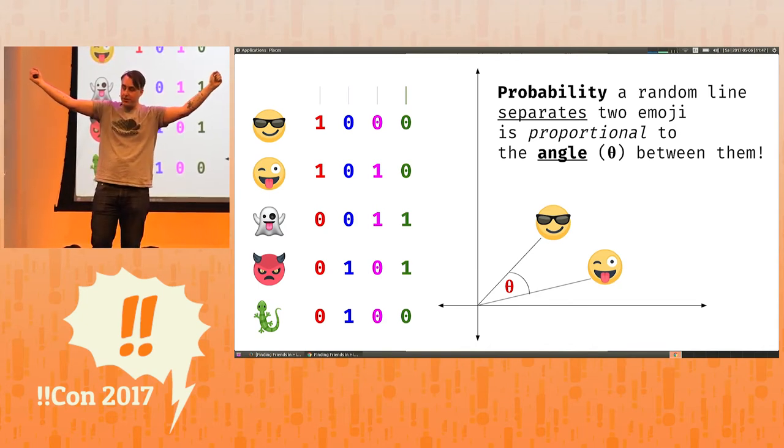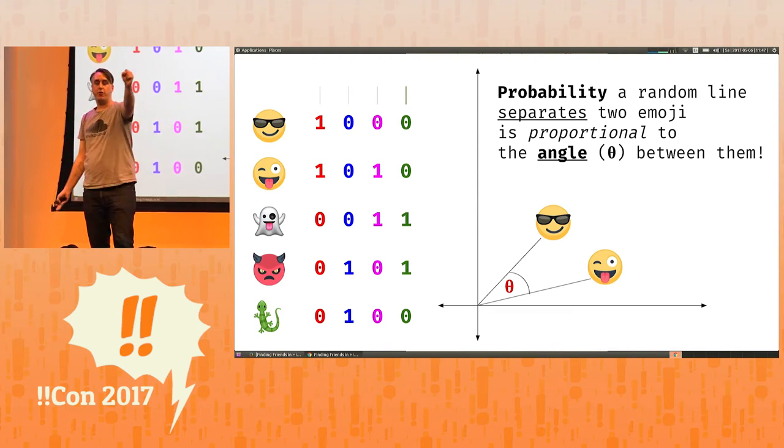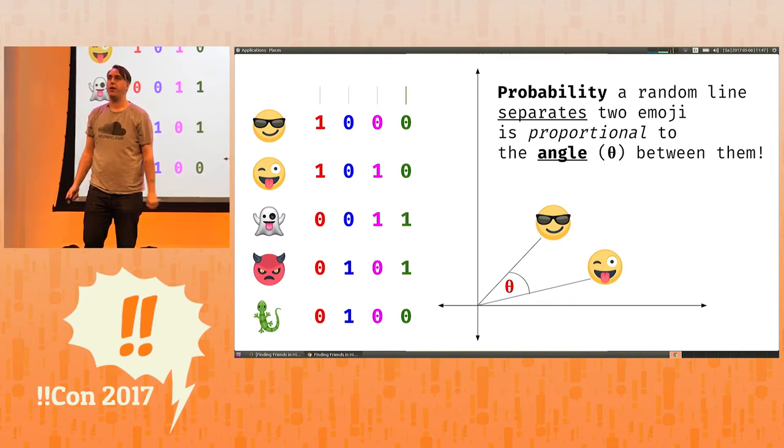Now, if the vectors are far apart, the likelihood of you picking a random line that separates them is very large. And in this way, they are proportional.